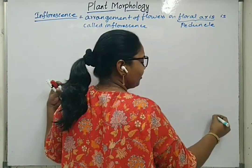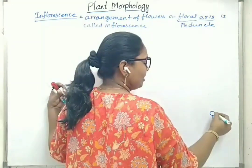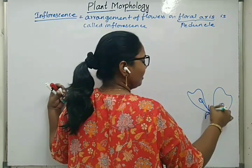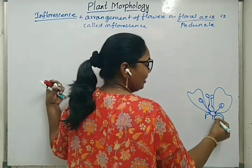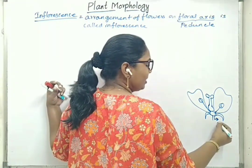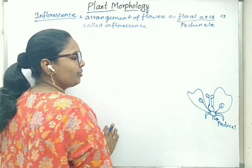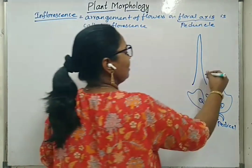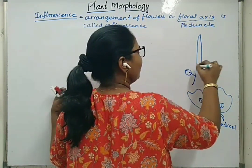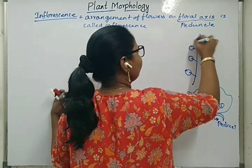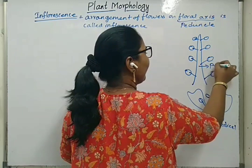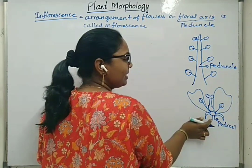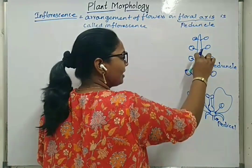In the case of a single flower, this is the stalk by which we hold a flower, and here will be the sepals, petals, stamens, and gynoecium. The stalk-like structure holding a single flower is called a pedicel. But in the case of inflorescence, there is one long floral axis on which many flowers are attached, and that axis is called the peduncle.